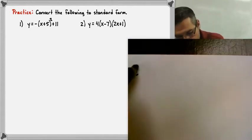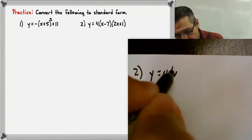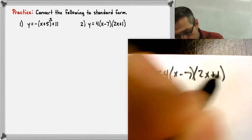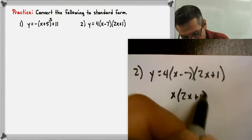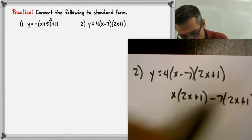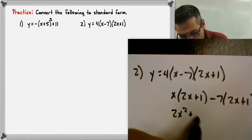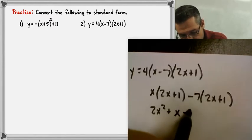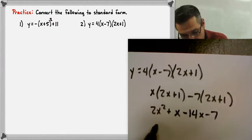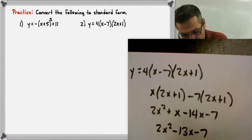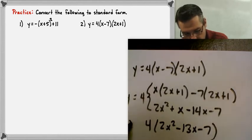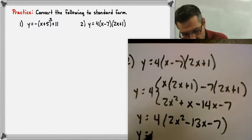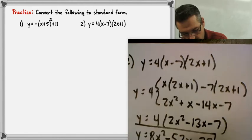For number two, we have y equals 4 times (x minus 7) times (2x plus 1), which is in factored form, and we want standard form. Expanding: (x minus 7) times (2x plus 1) gives 2x squared plus x minus 14x minus 7. Combining like terms: 2x squared minus 13x minus 7. We still have that 4 out front to multiply by, so distributing gives y equals 8x squared minus 52x minus 28. That is our standard form from factored form.